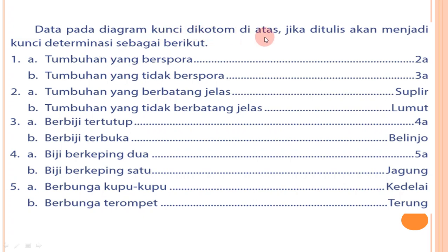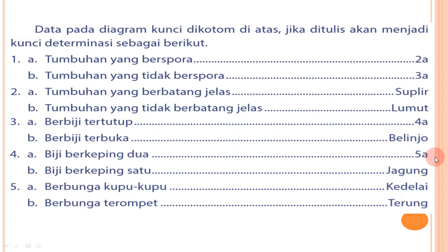Data diagram kunci dikotom tersebut jika ditulis menjadi kunci determinasi: 1A tumbuhan berspora, 1B tumbuhan tidak berspora; 2A tumbuhan berbatang jelas (suplir), 2B tumbuhan tidak berbatang jelas (lumut); 3A berbiji tertutup, 3B berbiji terbuka (melinjo); 4A berbiji berkeping dua, 4B biji berkeping satu (jagung); 5A berbunga kupu-kupu (kedelai), 5B berbunga trompet (terung).